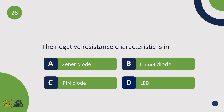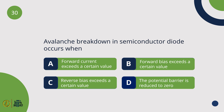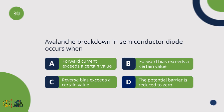The negative resistance characteristic is found in the Tunnel Diode. Which diode is used as a voltage regulator? Zener Diode. Avalanche breakdown in a semiconductor diode occurs when the reverse bias exceeds a certain value.